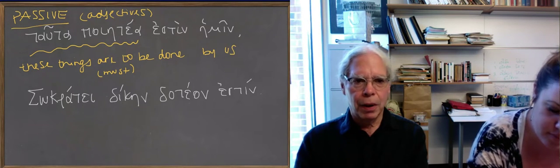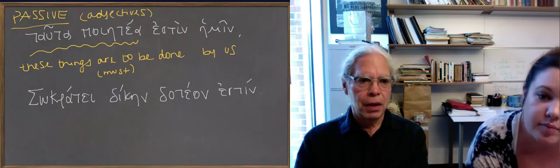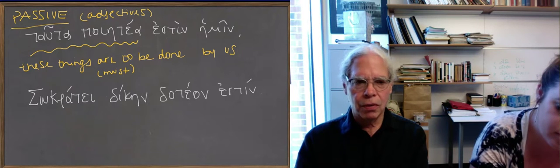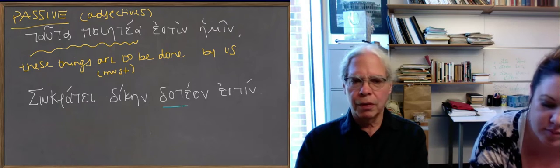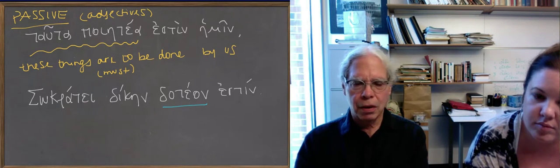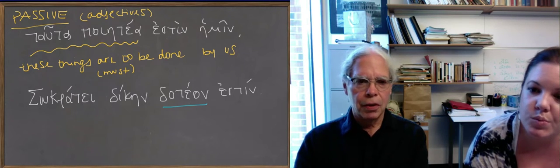The other model is exemplified by the second sentence up here, in which you've got Socratei, dative singular of Socrates, diken, accusative singular of dike in the sense of punishment, dotea, your verbal adjective in the neuter nominative singular, and estin, third person singular verb to be.